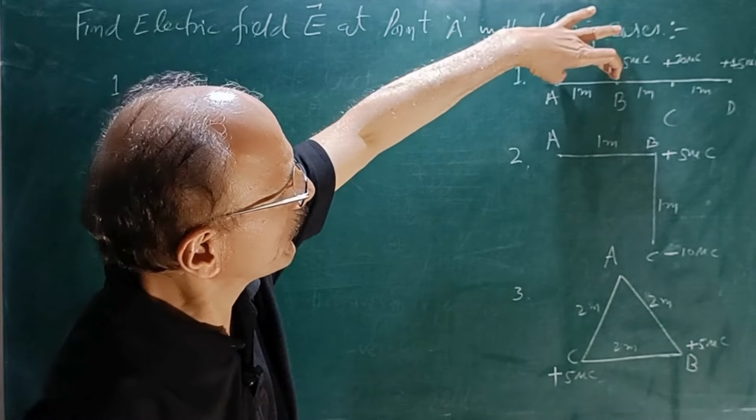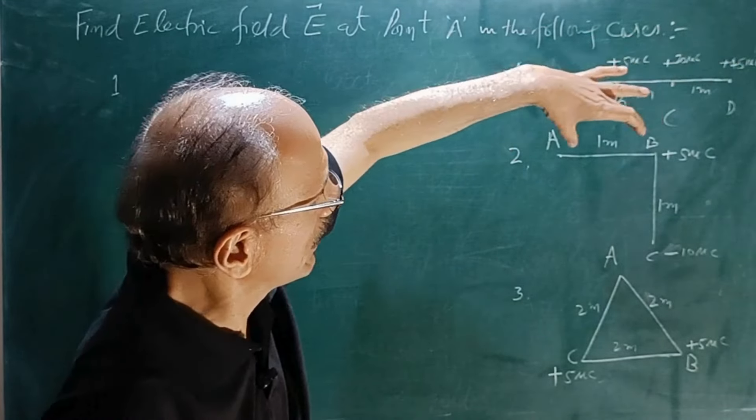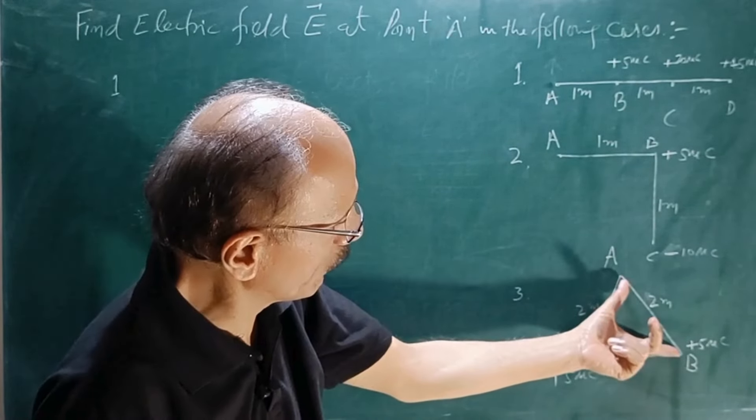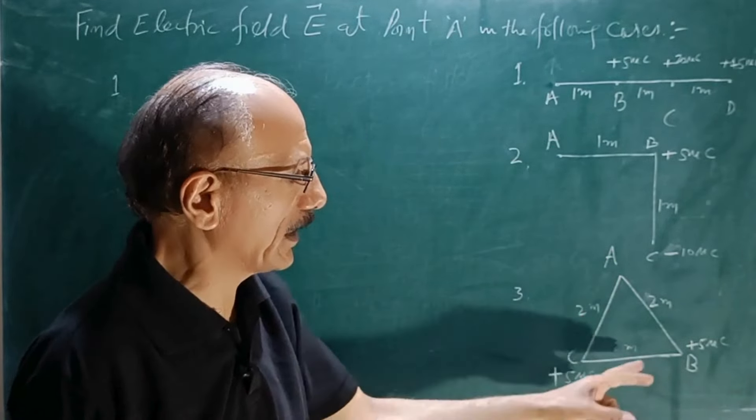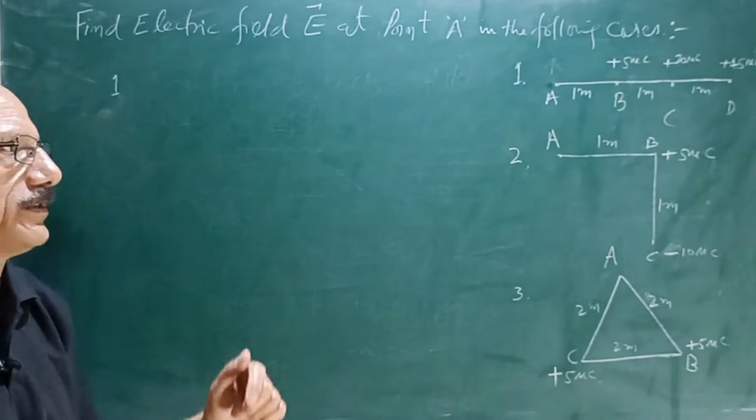Here the distance between AB is 1 meter, BC is 1 meter and CD is 1 meter. AB is here 1 meter, here it is 1 meter. AB is 2 meter, here it is 2 meter and this is also 2 meter. Then you can try further more questions.